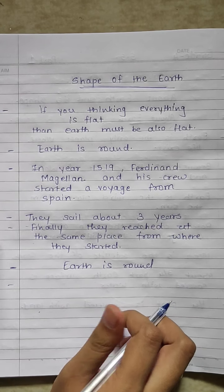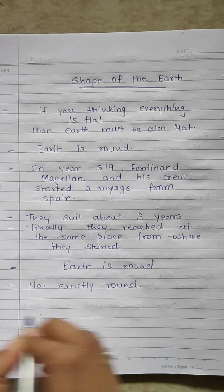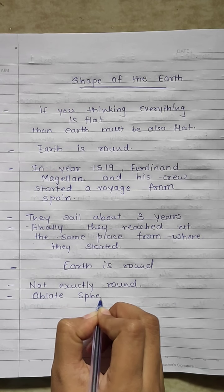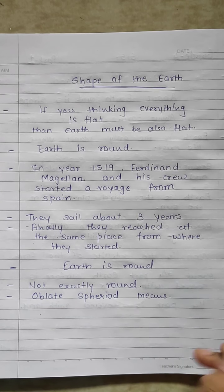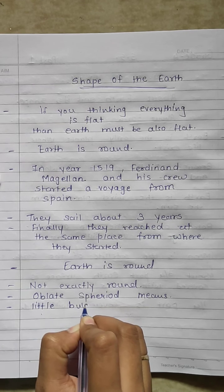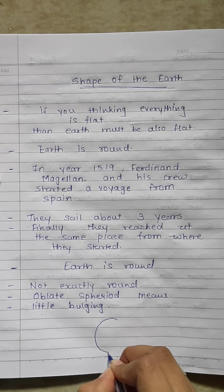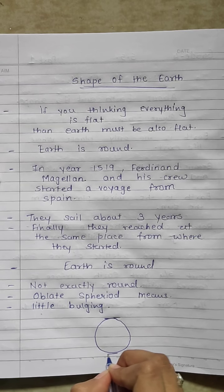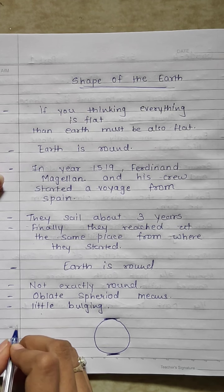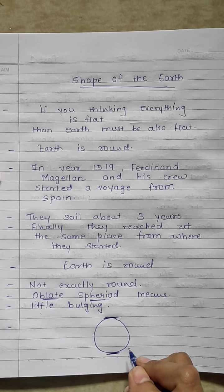But earth is not exactly round. Earth shape is little oblate spheroid. Oblate spheroid means not a perfectly spherical body, but it is little bulging. Bulging means it is flat from top and bottom. Suppose this is the earth and this is the top and the bottom, so this part of the earth is little flat. That's why it is bulging. So it is said that earth has an oblate spheroid shape. So this is about the shape of the earth.